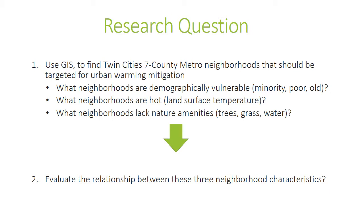The specific goal of this project was to use GIS to find neighborhoods in the Twin Cities Metro that should be targeted for urban warming mitigation. The three characteristics of neighborhoods I looked at were: what neighborhoods were demographically vulnerable, including minority, poor, and old populations; what neighborhoods were hot, assessed through land surface temperature; and what neighborhoods lacked nature amenities, which include the presence of trees, grass, and water. I then evaluated the relationship between these three neighborhood characteristics.